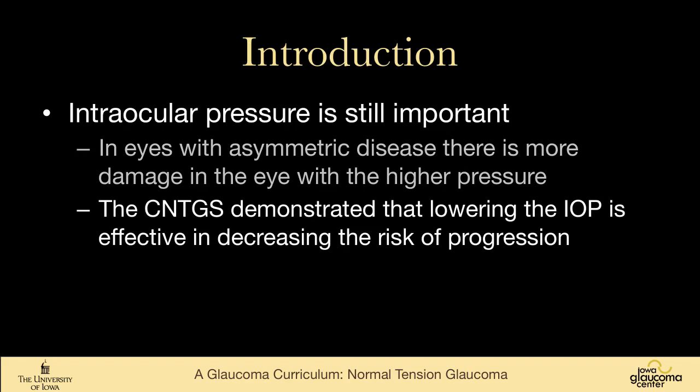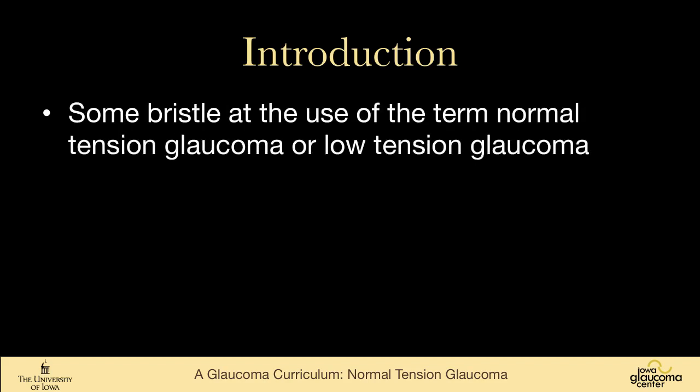As we'll talk about towards the end of this talk, in the collaborative normal tension glaucoma study, lowering intraocular pressure is effective in decreasing the risk of progression. There are some people who really dislike the term normal tension glaucoma or low tension glaucoma, because it's very arbitrary to separate out these people from people who have damage at higher pressures. But most of us do think about normal tension glaucoma as being a little bit different — a disease that's somewhat more vascular. Recognize that some of your colleagues will not like that term.